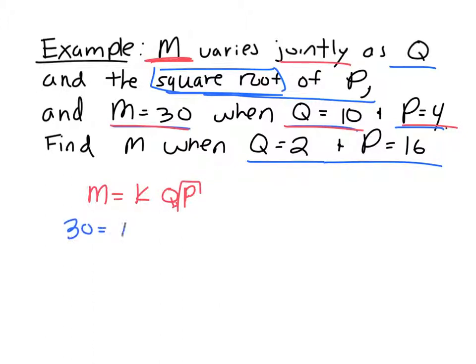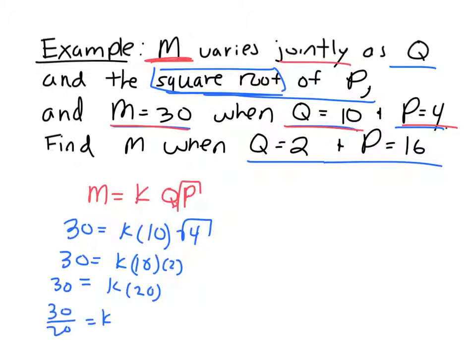So 30 equals k, Q is 10, and P is 4. So let's go ahead and simplify this. So I have 10 times 2, which is k times 20 equals 30. Divide both sides by 20, you get 30 divided by 20 equals k, which is the same as 3 halves equals k.